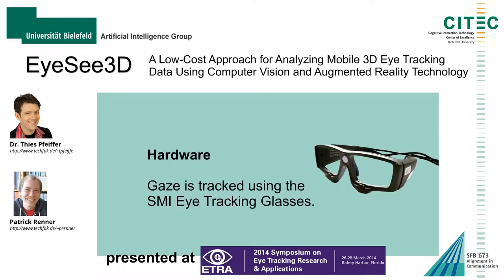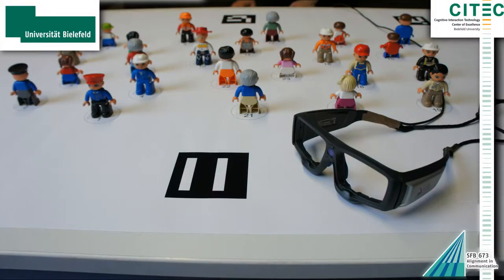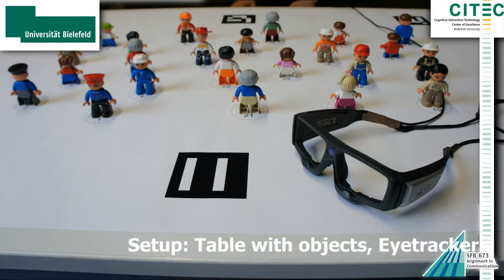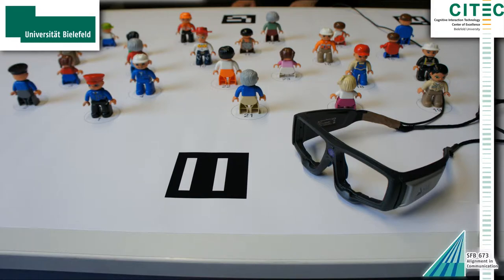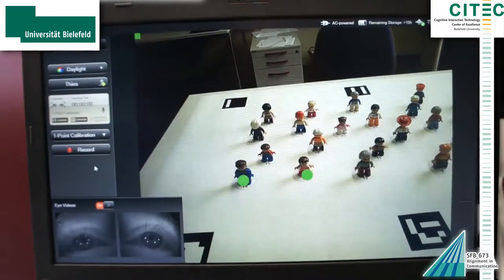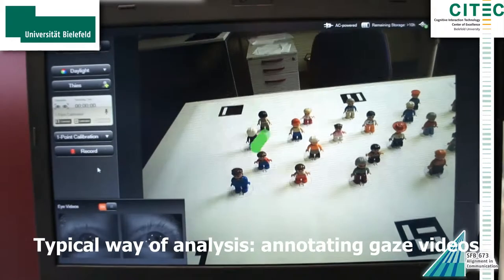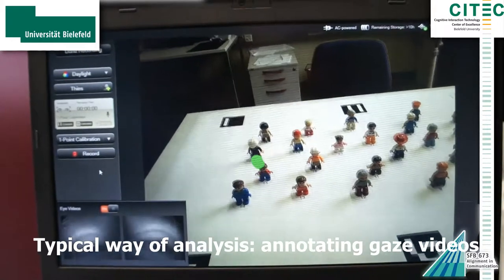Here we use the SMI eye-tracking glasses, but the IC3D approach is compatible with all scene-camera based systems. What you typically get from a scene-camera based system is a video where the gaze cursor locates the current point of fixation.